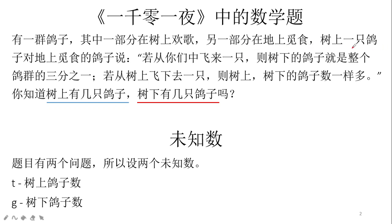第一个已知条件：如果有一只鸽子从地上飞到树上，那么地上的鸽子就是整个鸽群的三分之一。第二个已知条件：如果从树上有一只鸽子飞到地上，那么树上的鸽子数量和地上的鸽子数量是一样多的。